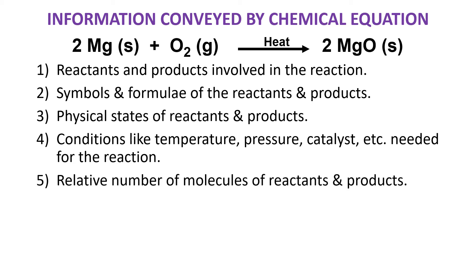What else does the chemical equation tell us? It tells us the relative numbers of molecules of reactants and products — relative, or comparative. As you can see here, it tells me that two atoms of magnesium and one molecule of oxygen — if there is no number on the left of O₂, the number is understood to be one — gives two molecules of magnesium oxide. So generally, two atoms of magnesium and one molecule of oxygen will always give two molecules of magnesium oxide.